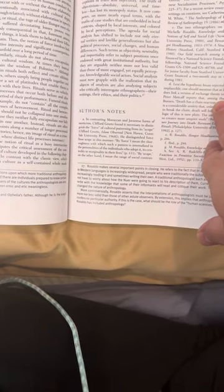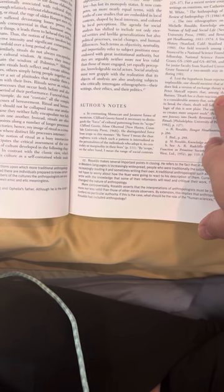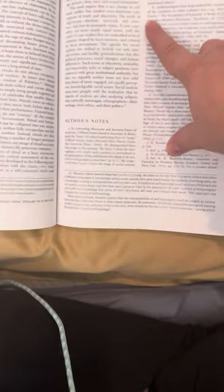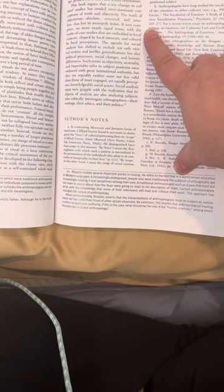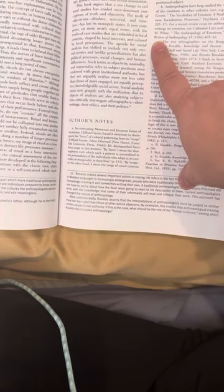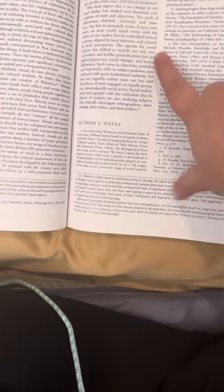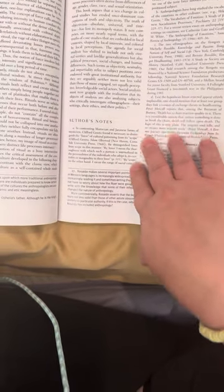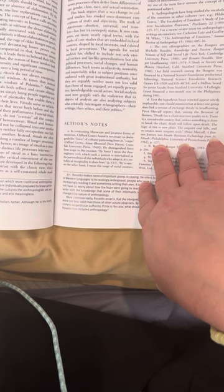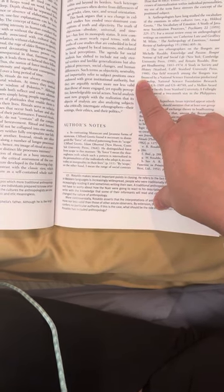Hence my image of ritual as a crossroads where distinct life processes intersect. The notion of ritual as a busy intersection anticipates the critical assessment of the concept of culture developed in the following chapters. In contrast with the classic view which posits culture as a self-contained whole made up of coherent patterns, culture can arguably be conceived as a more porous array of intersections where distinct processes crisscross from within and beyond its borders. Such heterogeneous processes often derive from differences of age, gender, class, race, and sexual orientation. The book argues that a sea change in cultural studies has eroded once-dominant conceptions of truth and objectivity.